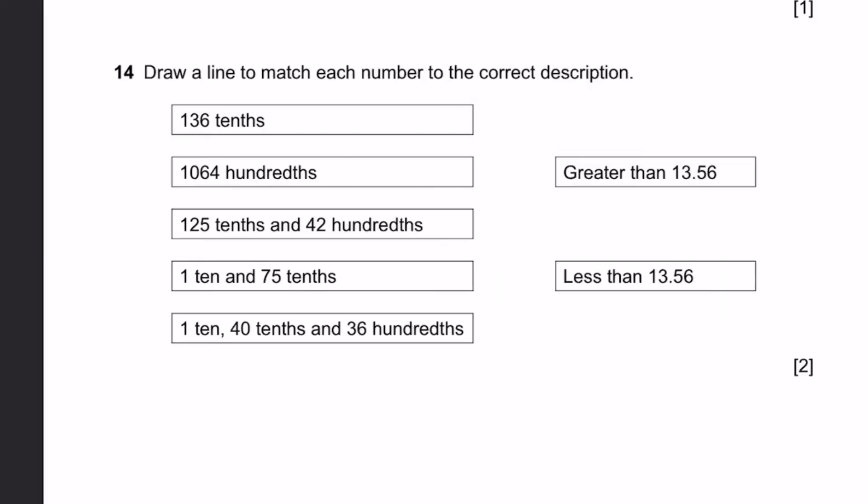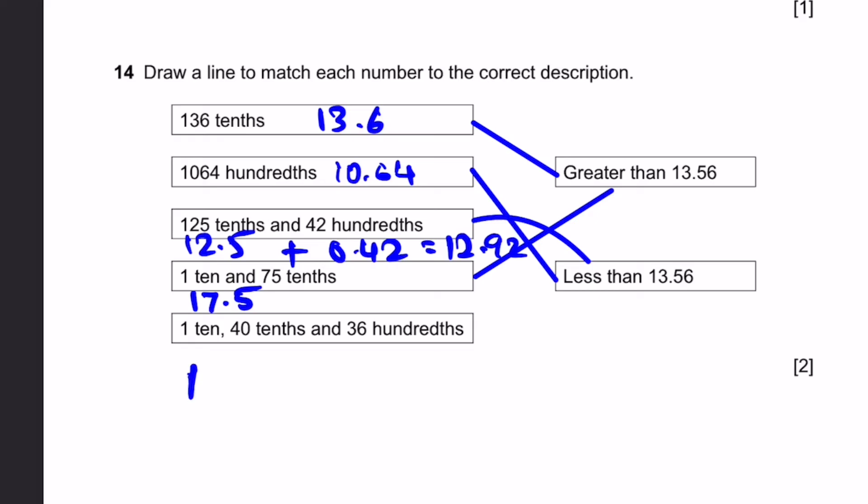Question 14. Draw a line to match each number to the correct description. 136 tenths: that's simply 13.6. Is it greater than or less than 13.56? It's greater than because the tenth place is larger. As for the second one, 1,064 hundredths: that's 10.64, which is clearly less than 13.56. Now, 125 tenths and 42 hundredths: that's 12.5 plus 0.42, which is 12.92. This is less than 13.56. 110 and 75 tenths: that's going to be 110, 75 tenths, 17.5, which is clearly greater than 13.56. 110, 40 tenths and 36 hundredths: that's going to be 110, 40 tenths (that's just 4 ones), and 36 hundredths. 14.36, which is once again clearly greater than 13.56. This will be our answer.